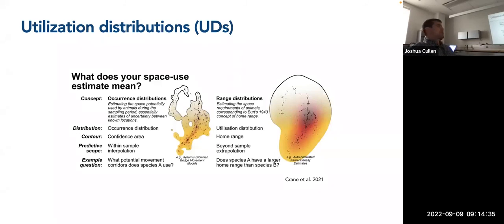So to break down utilization distributions a bit further, there's, I would say, two general types of utilization distributions that you want to think about when trying to estimate space use for a study. And these are the occurrence distribution and the range distribution. So I took this figure from Crane and colleagues from this recent paper from last year. And I think this does a really good job of making this comparison. So an occurrence distribution, I would say in general, is what most people are trying to quantify. And it's essentially estimating the space potentially used by the animals during the sampling period. So you're just trying to see or estimate what space was used.